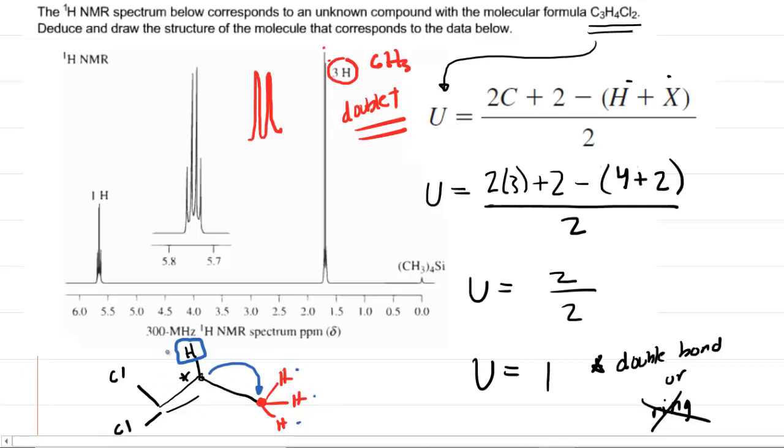So let's do the n plus one rule. We would have three plus one, which of course is four. That would be a quartet. So this hydrogen should be a quartet. Look at the signal for it. Here it is. One hydrogen, which corresponds to this blue boxed hydrogen, should be a quartet.